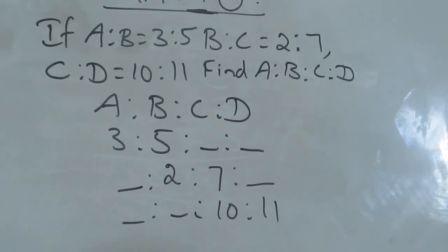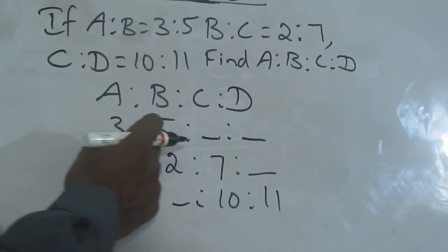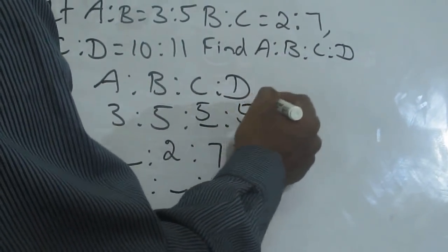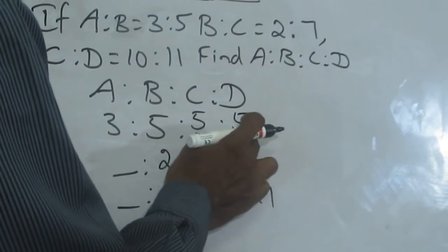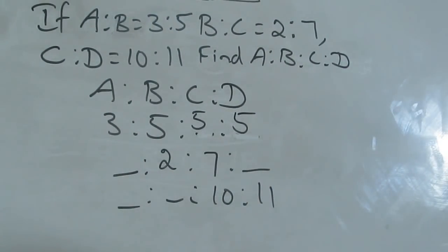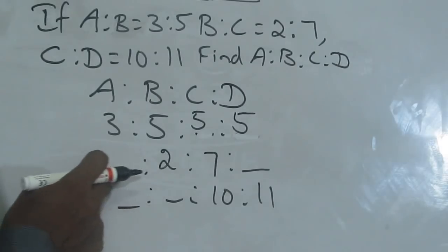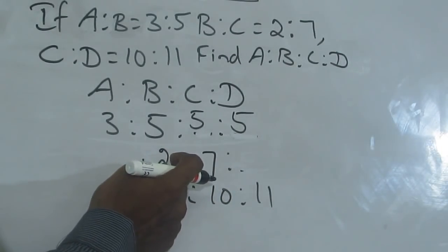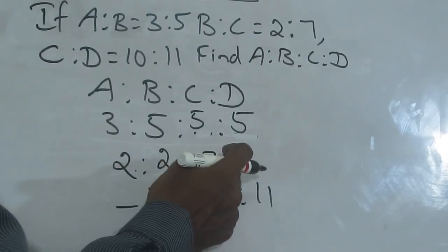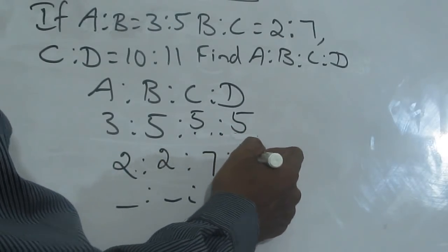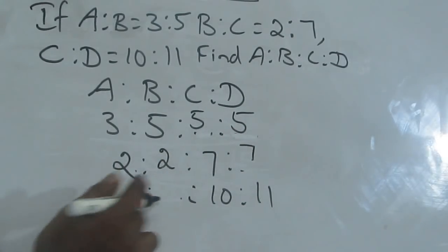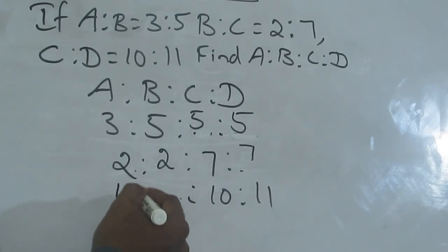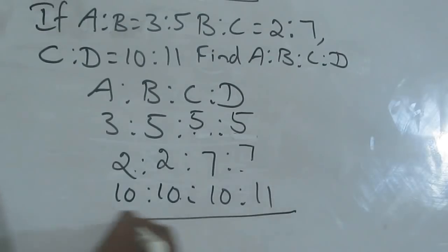Now when you observe here, what you have to do? The first line is ending with 5, so just put 5 at the end. So 3 is to 5 is to 5 is to 5. The second line, the first and last columns are empty. This is starting with 2, so write 2 here. This is ending with 7, so write 7. The third line starts with 10, so the previous two are blank — fit it with 10. Now the next step is just multiply.